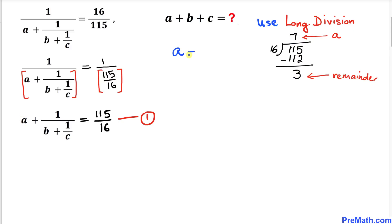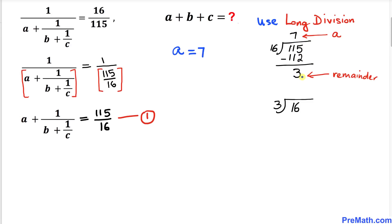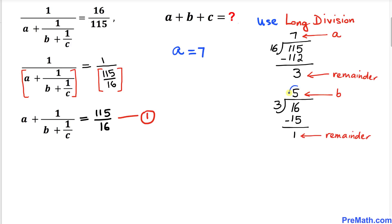Now we are going to repeat the same process. This 16 — our previous divisor — is going to become the dividend, and this remainder 3 is going to become our divisor. Let's perform the long division once again: 3 times 5 is 15. We subtract 15 from 16, so 1 is our remainder. This quotient of 5 turns out to be our b value.